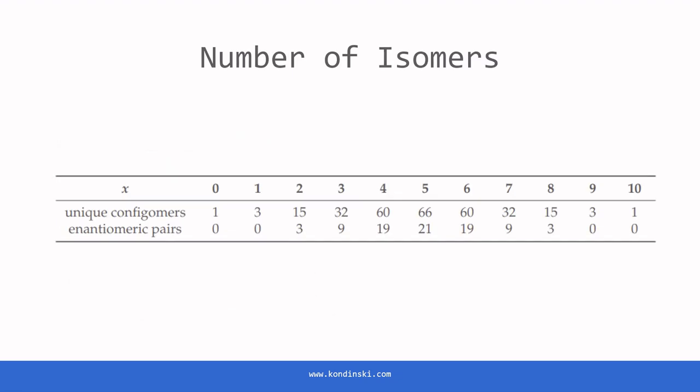Our algorithm identifies 318 configurations by substituting primary metals with heterometals. The maximum of 66 configuration isomers occurs at five substitutions, accompanied by a peak of 21 enantiomeric pairs.